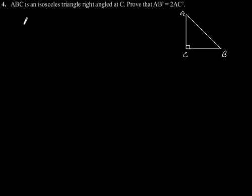Exercise 6.5, question number 4. ABC is an isosceles triangle, right angled at C. Prove that AB squared is equal to 2AC squared.